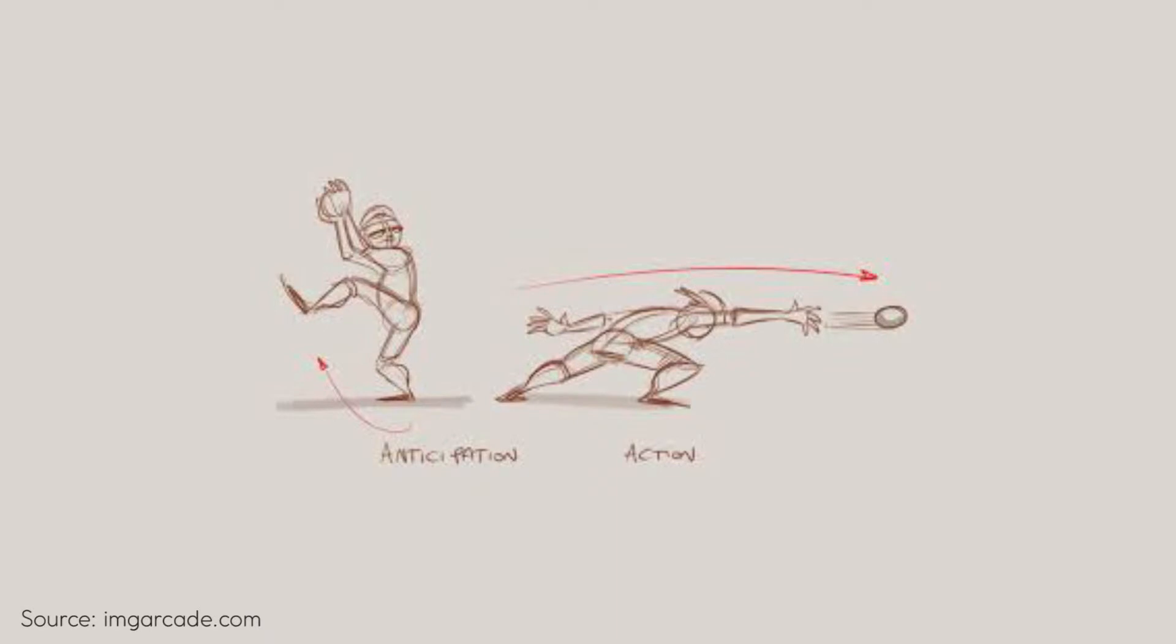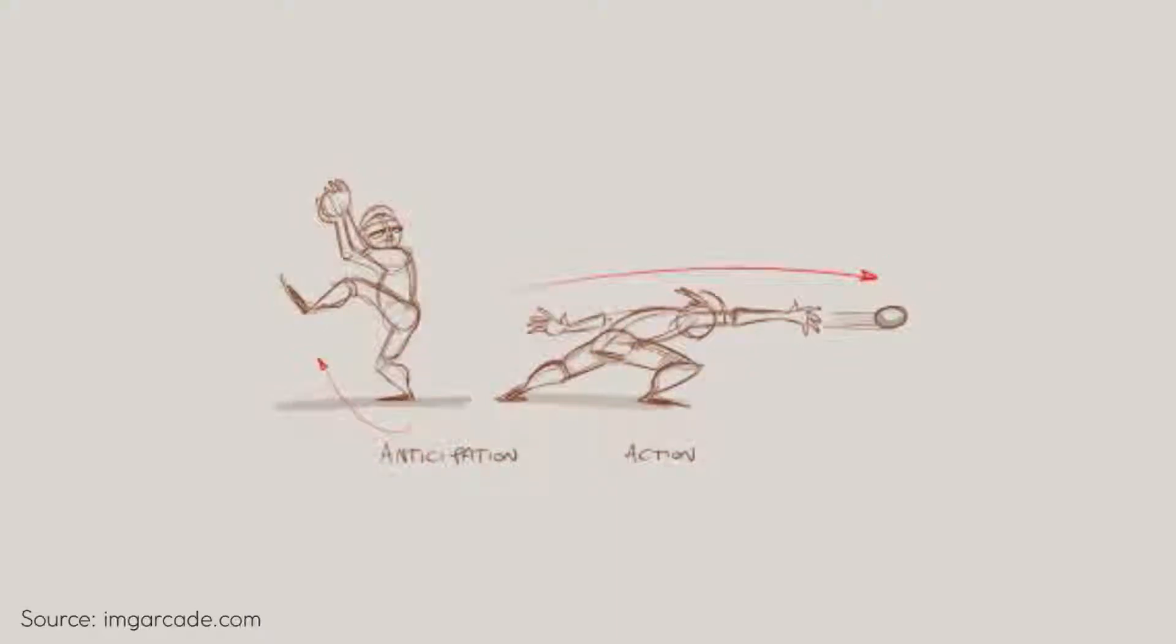Like in this example, Donald is preparing to run, so now we know that he's going to dash off the screen. But if he's just standing on the screen and suddenly dashes off, we are not prepared and we might even miss that action of him dashing off.